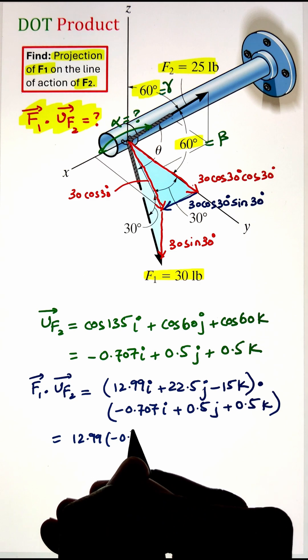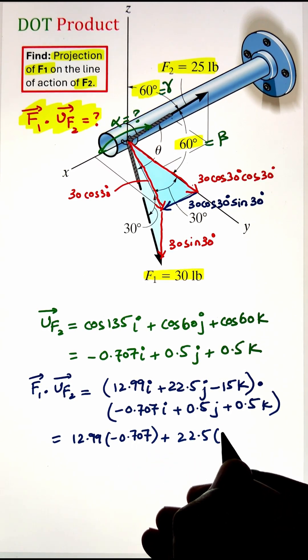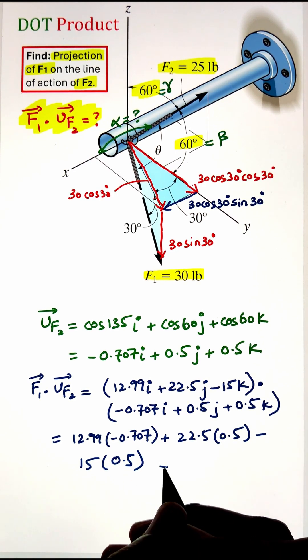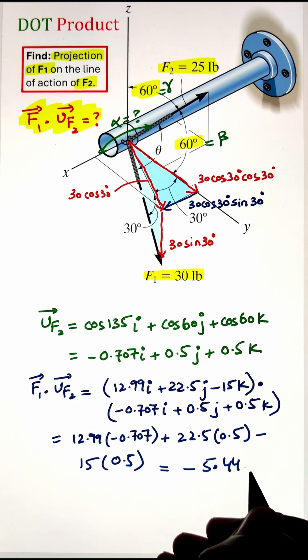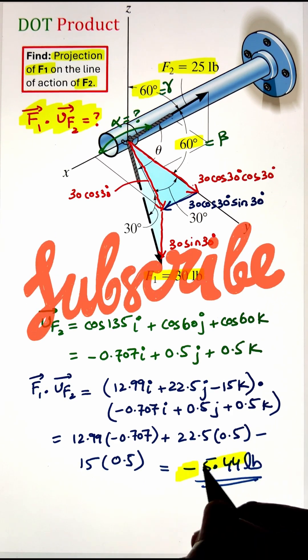In other words, the i components will be multiplied together, then the j components will be multiplied together, and finally the k components will be multiplied together. This gives us our final value of negative 5.44 pounds. The negative sign indicates that the sense is opposite to the direction of force vector F2.